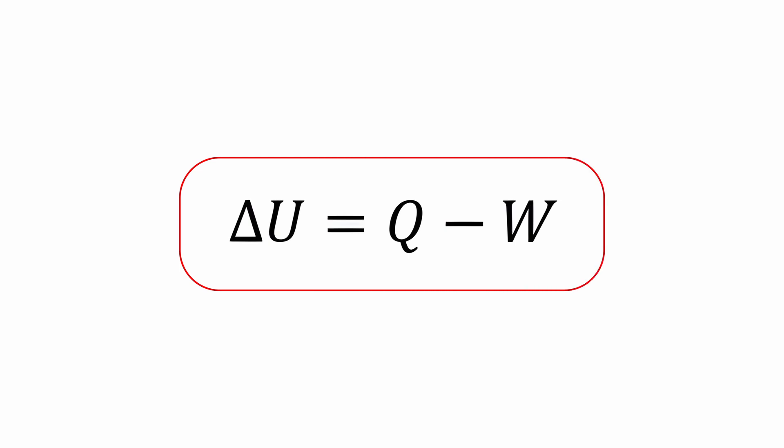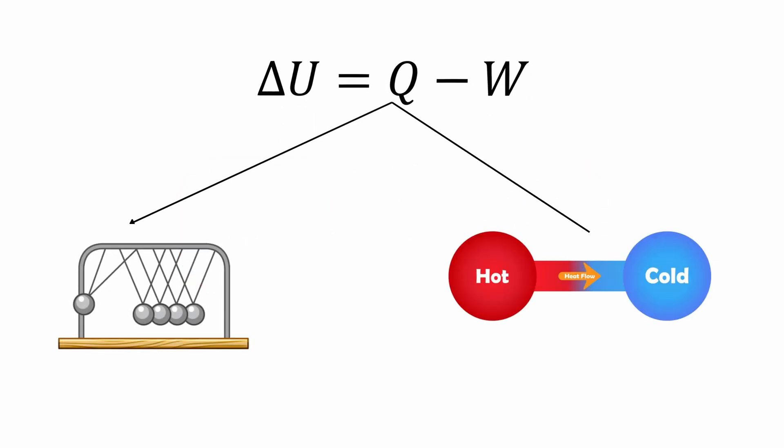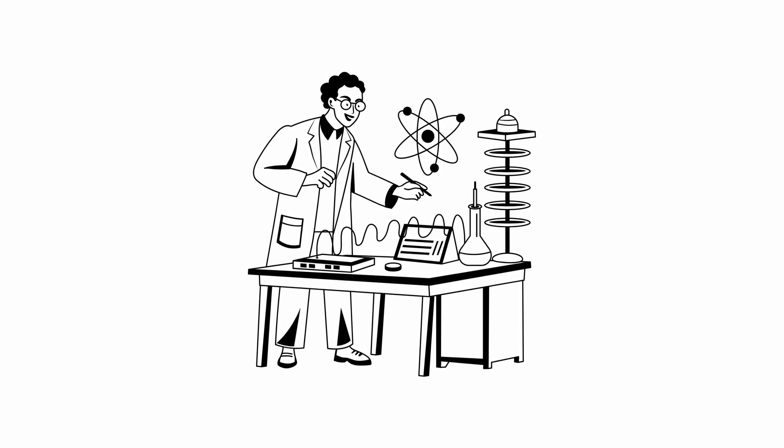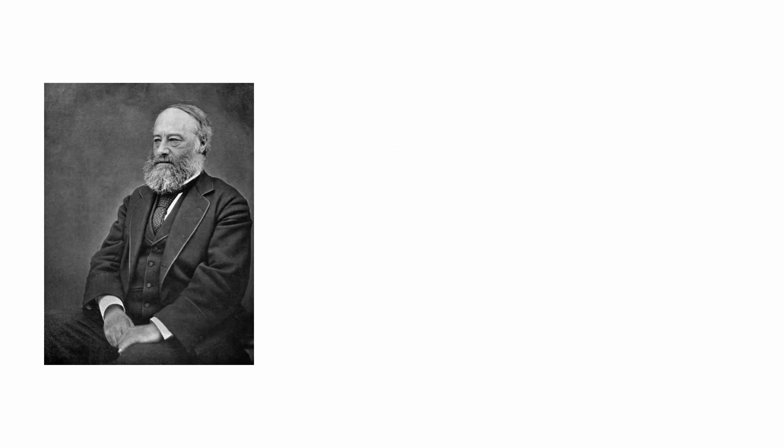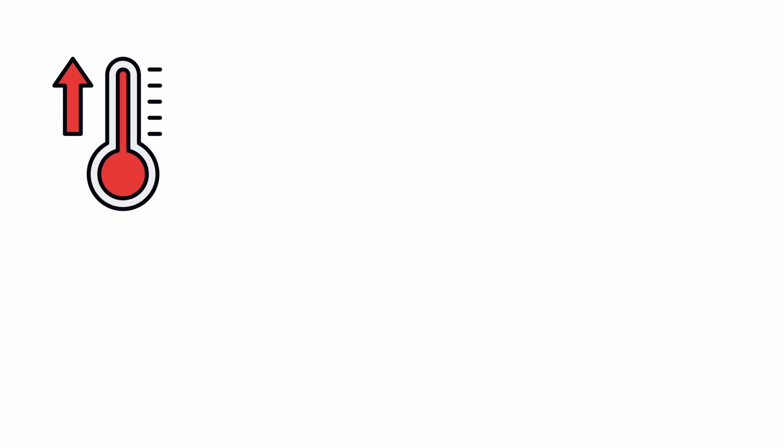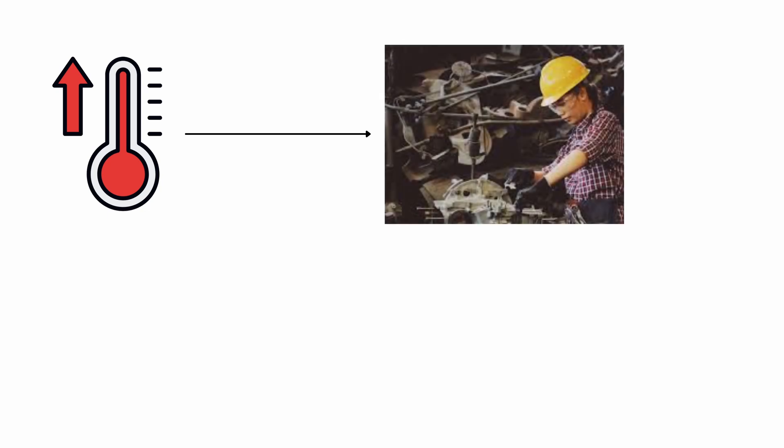This formula unifies mechanics and thermodynamics under the principle of conservation of energy. In his experiment on the mechanical equivalence of heat, James Joule used a system in which a descending weight rotated paddles immersed in water. By measuring the temperature increase, he demonstrated that mechanical work could be directly transformed into heat.